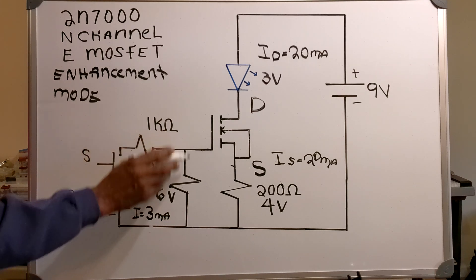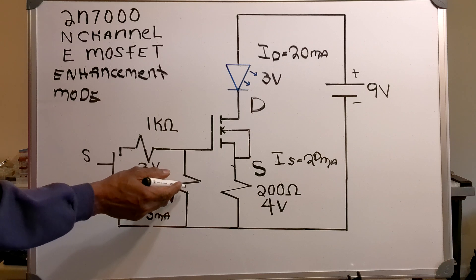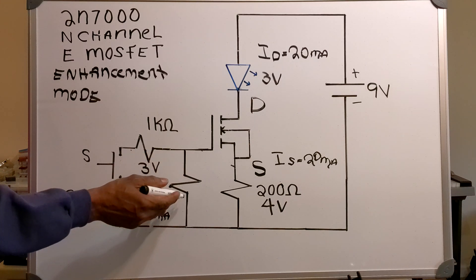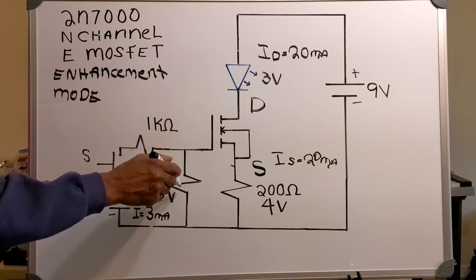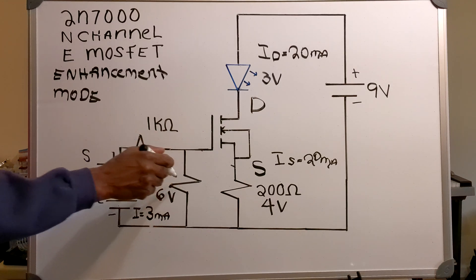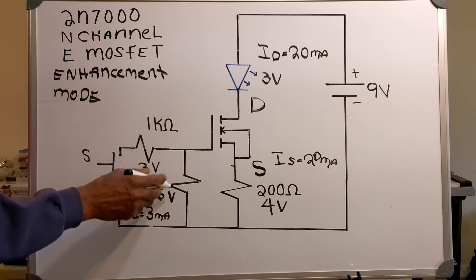Now, this is a series circuit. So, if I'm going to have a current of 3 milliamps flowing through my 1K ohm resistor, I will also have a current of 3 milliamps flowing through this resistor. So now, I need to find the value of my resistance.